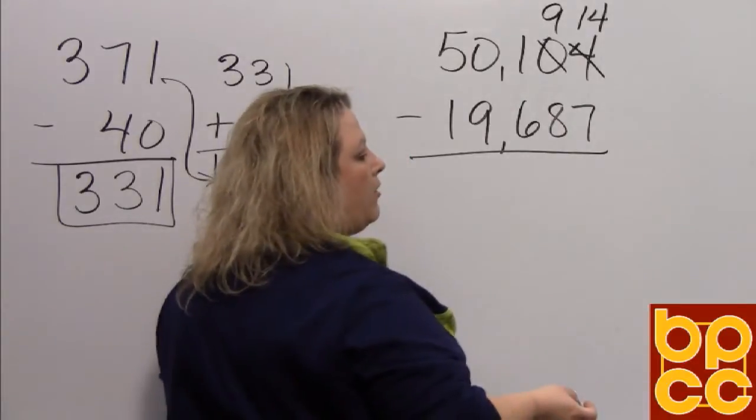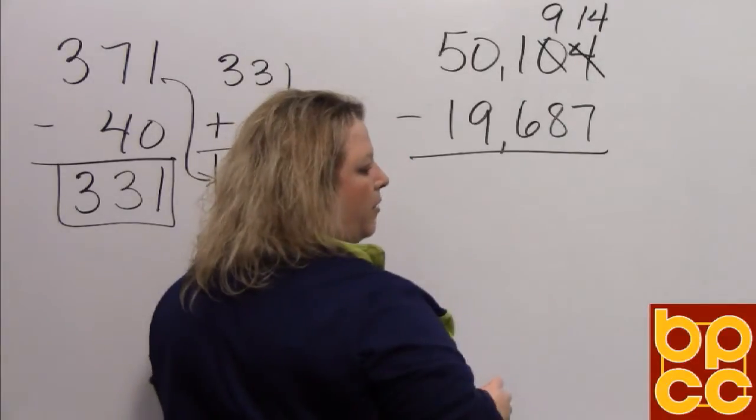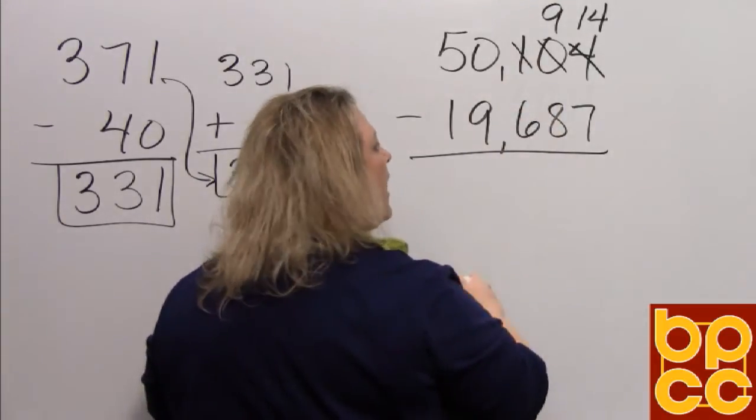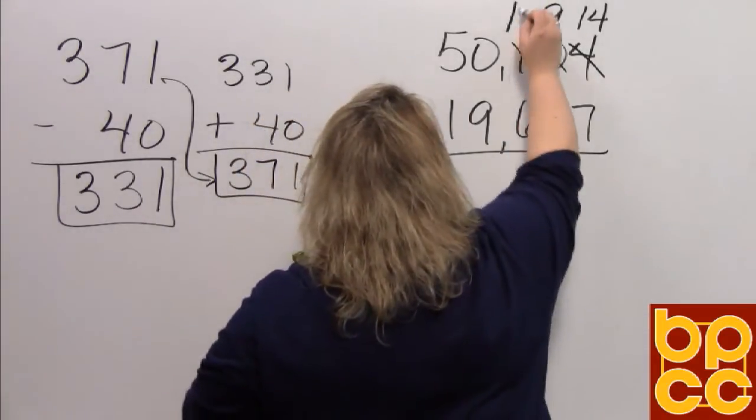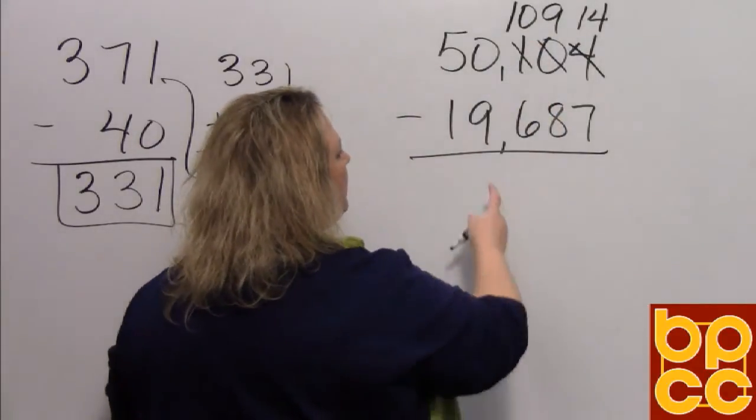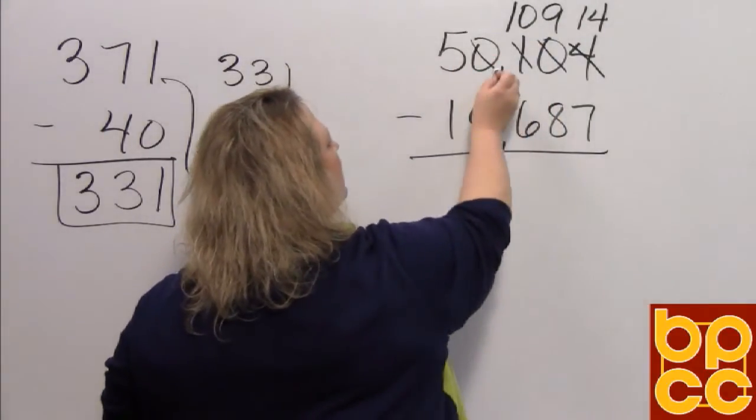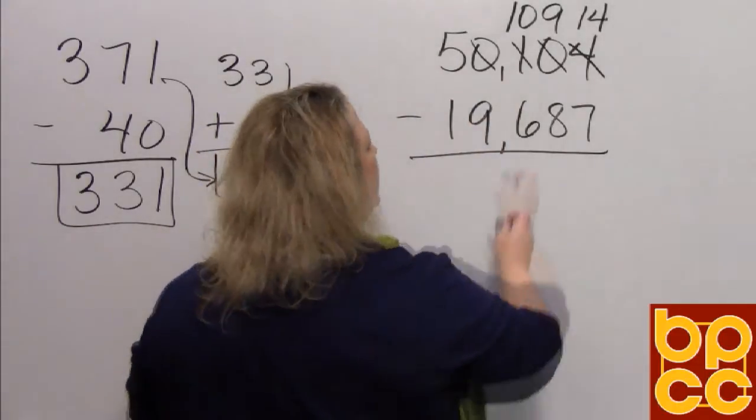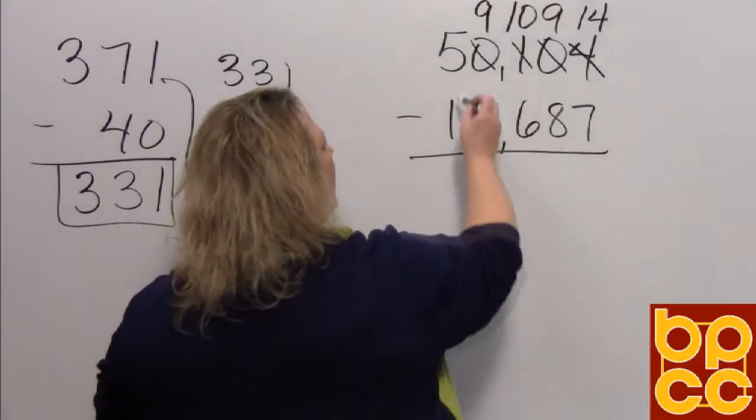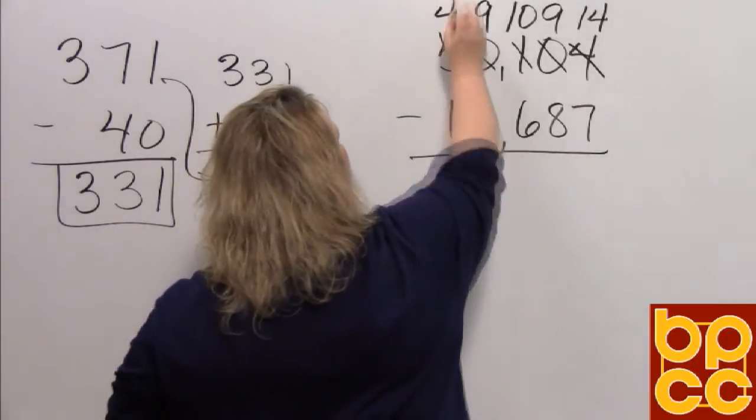When I borrowed from him, I had to also borrow from the guy next door to him. He was 11. And when I had to borrow, he went down to 10. I also had to borrow from the next man. And he was a 10. He now becomes a 9. And the last guy I had to borrow was a 5 and he becomes a 4.